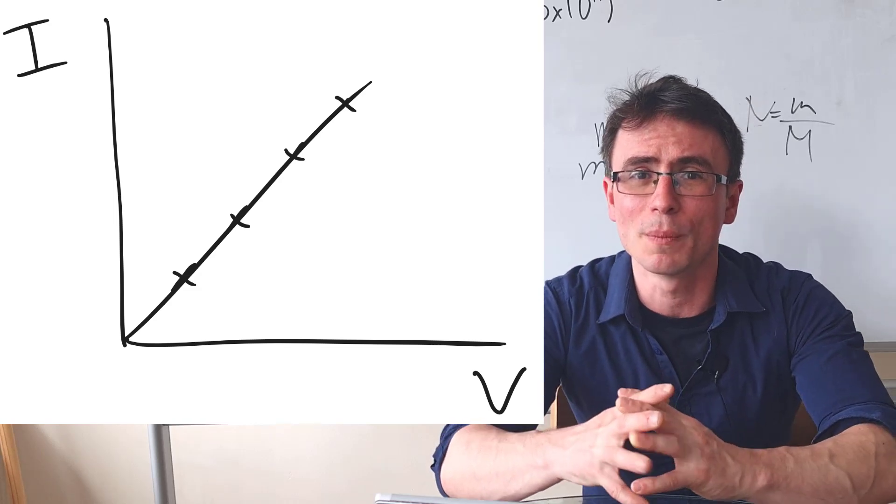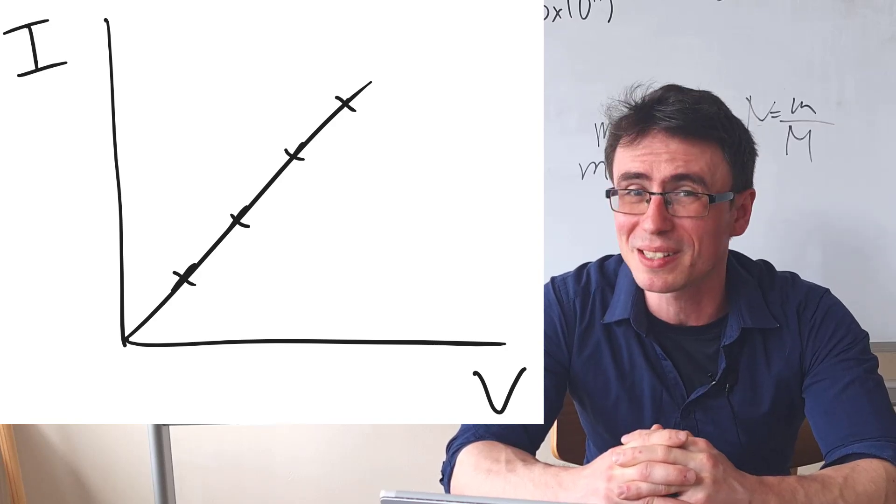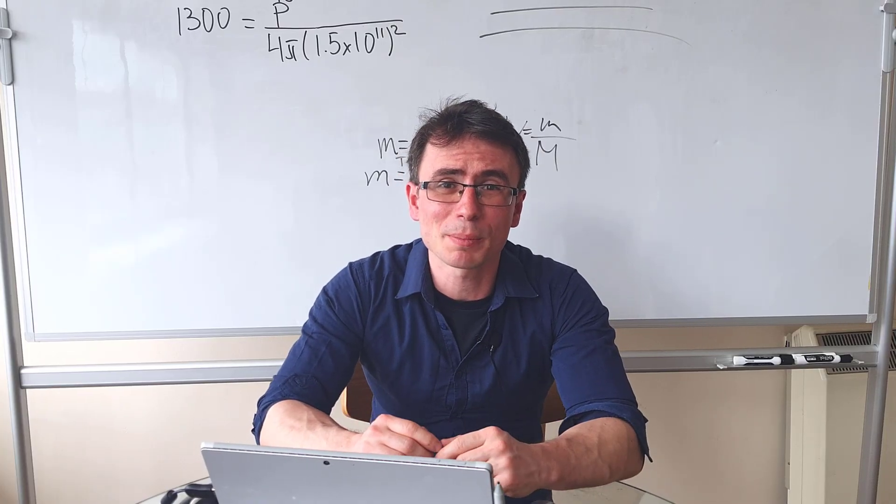There are some exceptions though. For instance, in an IV graph, if the current is zero, the voltage will need to be zero. Or Hubble's law, when the distances between galaxies are zero, so will the speed.